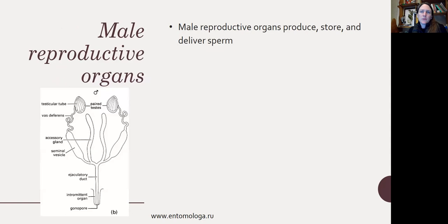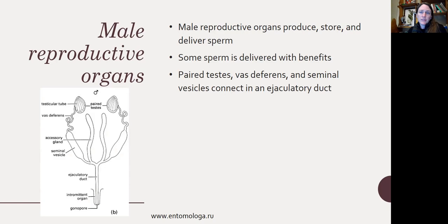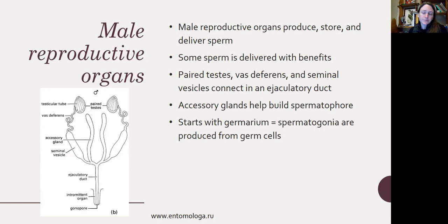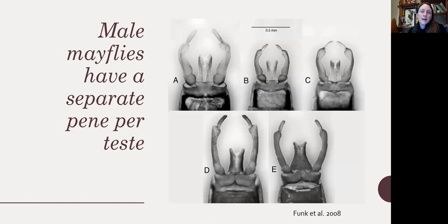Male reproductive organs store, produce, and deliver sperm. Sometimes the sperm is delivered with benefits — through spermatophores, which provide extra nutrients and nutrition to the female. In male insects there are paired testes, paired vas deferens, and then seminal vesicles that connect in an ejaculatory duct. There are also accessory glands that can help build the spermatophore. Sperm development starts with the germarium, where spermatogonia are produced from germ cells — they divide and transform into spermatocytes.